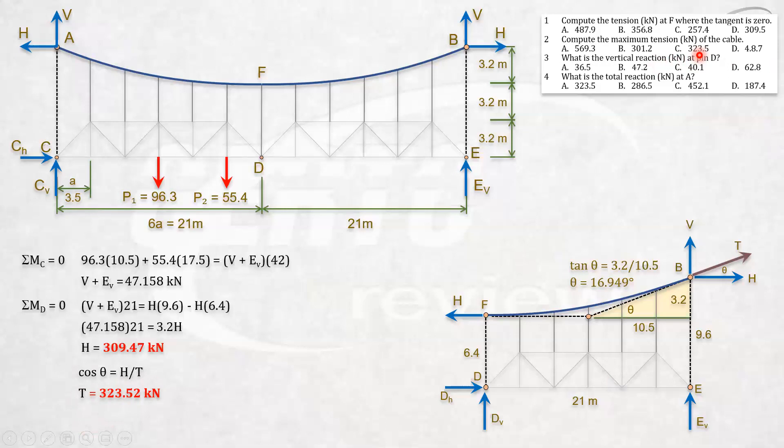Actually, we can now solve everything here. What's the next problem? The vertical reaction at D. So we can now apply summation of forces vertical zero. Take note, EV and V are already known. So we have D vertical, EV plus V plus DV equals zero. All the vertical forces equals zero. EV plus V is 47.158. So therefore, your DV is equal to negative 47.158. We got a negative sign, so meaning our assumption here is wrong. The magnitude is the same. This should be downward. So your reaction vertical is downward. And we can also see here because H and H are the same, your DH is zero. There is no horizontal reaction here. So your DV should be downward, 47.2.